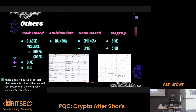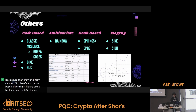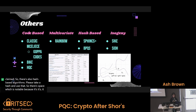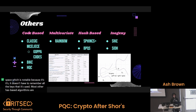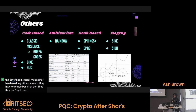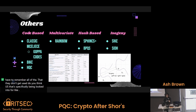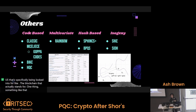There's also hash-based algorithms. These take a hash and use that as their one-way function. There's SPHINCS+, which is notable because it's stateless — it doesn't have to remember all the keys it's used before. Most other hash-based algorithms are stateful and have to remember all the keys they've used before so they don't get reused. VPQS is specifically being looked into for cryptocurrency and blockchain — that actually stands for something blockchain-quantum related, I don't remember exactly.